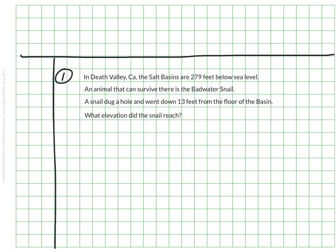So here's the first question that you need to have recorded. Write neatly, make sure you have it all. In Death Valley, California, the salt basins are 279 feet below sea level. An animal that can survive there is called the badwater snail. If we know that a snail dug a hole and went down 13 feet from the floor of the basin, what elevation did the snail reach?